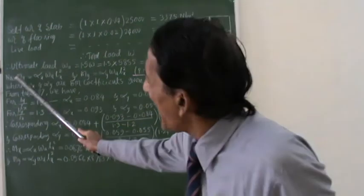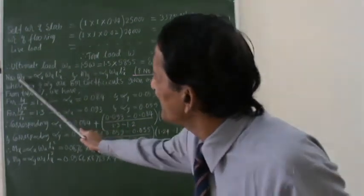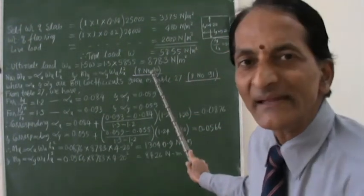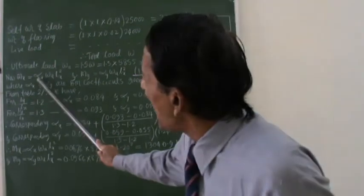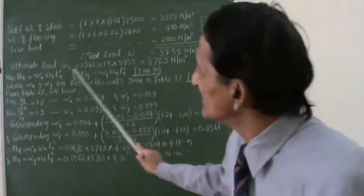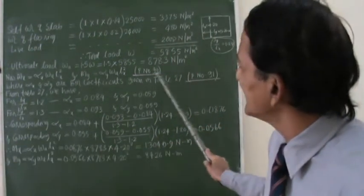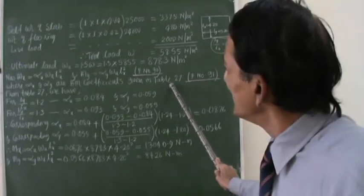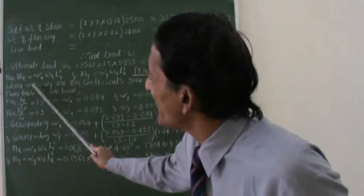In the IS code, LX and MY are given by these two equations which are there on page number 9. So now here, alpha X and alpha Y are called bending moment coefficients. These bending moment coefficients are given in table number 27. So now we shall try to see how to calibrate these alpha X and alpha Y.